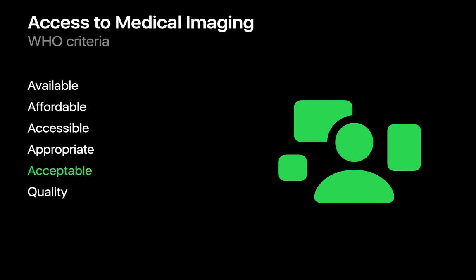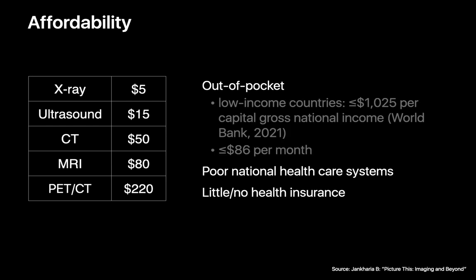Medical imaging must also be acceptable — provided in a way that respects cultural beliefs and individual attitudes — and finally, of quality: safe and efficacious to the patient, and safe to the staff providing it. Low-income countries may face challenges in achieving these criteria. For example, affordability: while the average cost of an x-ray or ultrasound exam is substantially less expensive than advanced imaging studies, these costs can be quite substantial if your average monthly income may be under $86, where national healthcare systems are often poorly funded and little or no health insurance may exist.